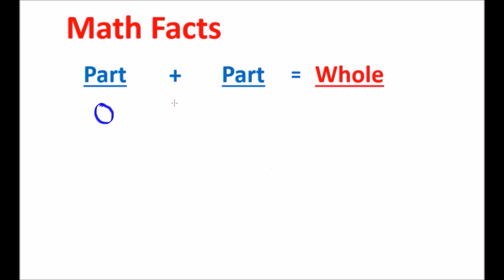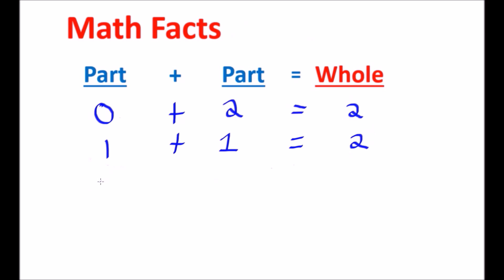Looking at the math facts we've learned: 0 plus 2 equals 2, which is the whole. We also learned that 1 plus 1 equals 2. And because we have 0 plus 2, we know that 2 plus 0 also equals 2. This uses the commutative property of addition, where you can switch the numbers around and get the same answer. The 1 plus 1 is called a double, meaning you're adding the number to itself — in this case, 1 plus 1 gives us 2.